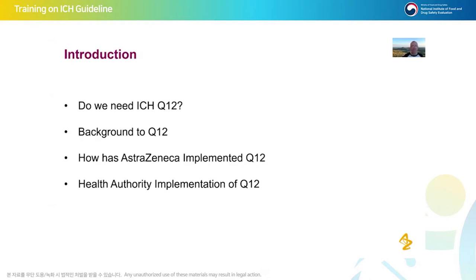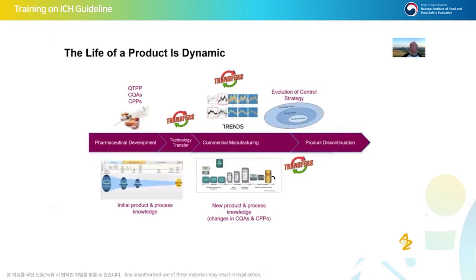This slide illustrates the activity that happens across a product's lifecycle, right from clinical pharmaceutical development of a product where we start to understand the product, through technology transfer, commercial manufacture, and product discontinuation. Throughout that period there are site transfers, changes to the process, product understanding, and a whole evolution of the control strategy. These are essential things that drive change and drive improvement, as expected of the pharmaceutical industry as written in Q10.